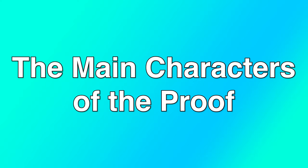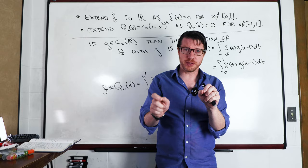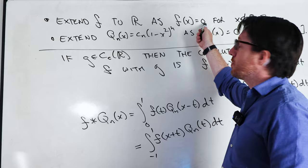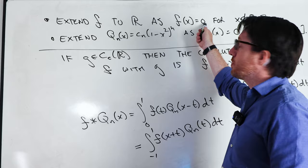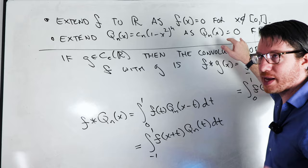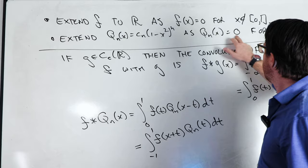Now let's talk about our function f, which we've restricted to [0, 1] with f(0) = 0 and f(1) = 0. We're going to extend it to all the real line by defining it to be 0 outside [0, 1]. We can do this continuously since f takes those zero values at the endpoints. Similarly, qn(x) is defined to be 0 outside the interval [-1, 1]. With these extensions, we can talk about convolutions properly.